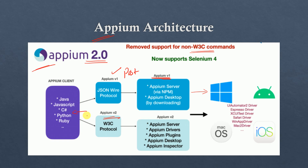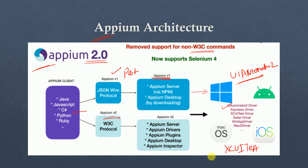One more important point: whenever we are passing a request to an Android device, internally Android is based on the UI Automator 2 framework. For iOS applications, it is based on the XCUITest framework. With the help of UI Automator 2 for Android and XCUITest for iOS, we interact with these frameworks, connect the session, and finally see the response on the Appium client with a session ID returned back to the client.